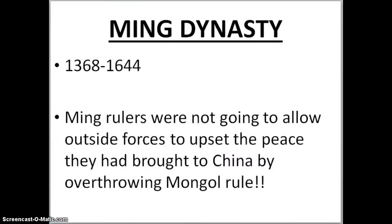The Ming dynasty — we need to talk about this dynasty. It's going to be around from 1368 to 1644. The Ming rulers are not going to allow outside forces to upset the peace that they had brought to China by overthrowing Mongol rule. They don't want European people to come into their country trading wherever they want — they're going to really set boundaries for these foreigners.